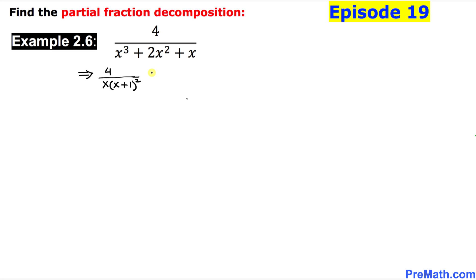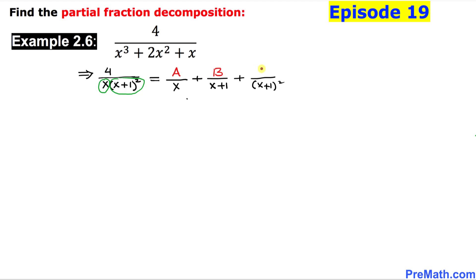Now we are going to get started with the partial fraction decomposition process. In the denominator we have x as a single linear factor and (x+1)² meaning x+1 repeats twice — these are repeating linear factors. So we set up three fractions: A/x + B/(x+1) + C/(x+1)². Our task is to find the constants A, B, and C.